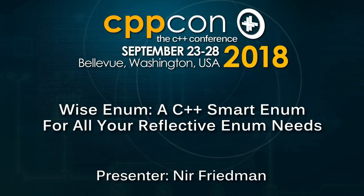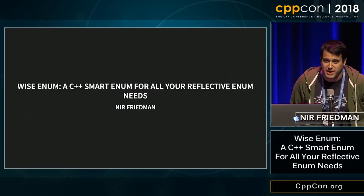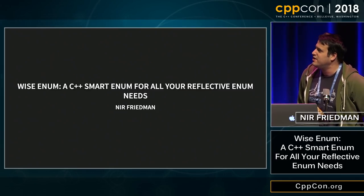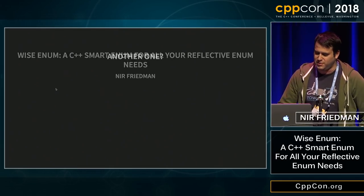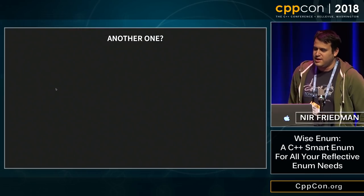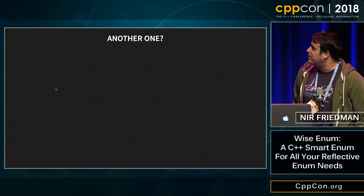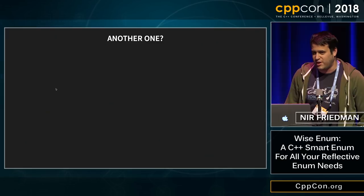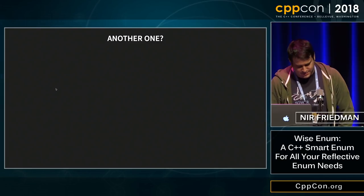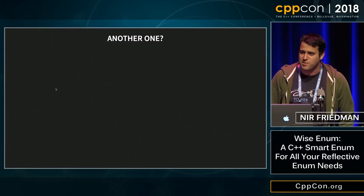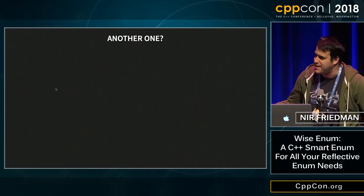Hey everyone, so this talk's on Yzenum. It's a small library that I wrote — it's almost embarrassingly short by lines of code. So I know what you're all thinking: really, another one? An Yzenum library or a Smartenum library? This is like the C++ equivalent of a to-do app — there's like four million of them on the App Store.